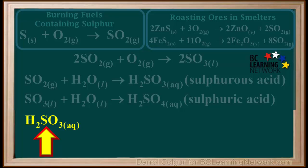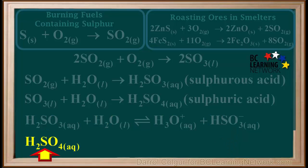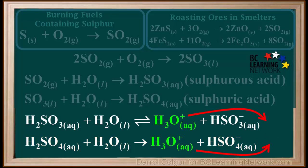Because H2SO3 is a weak acid, it undergoes partial ionization in water to produce hydronium ions and hydrogen sulfite ions. And because H2SO4 is a strong acid, it ionizes completely in water to produce hydronium ions and hydrogen sulfate ions. The presence of hydronium ions in the water results in the formation of acid rain.